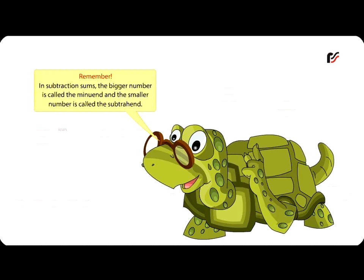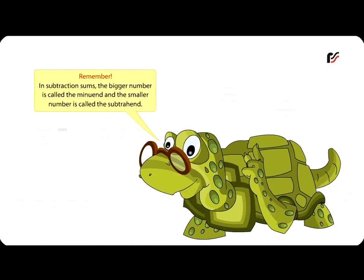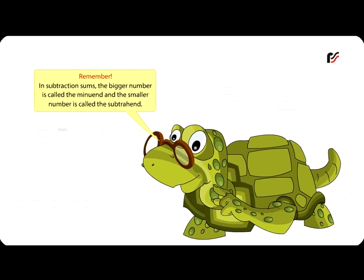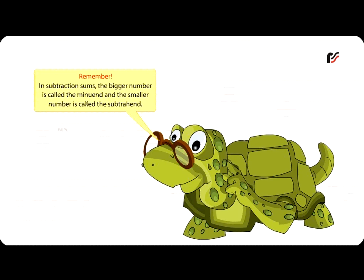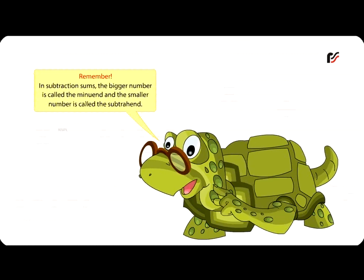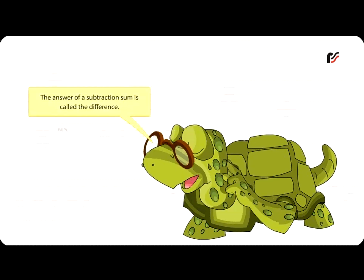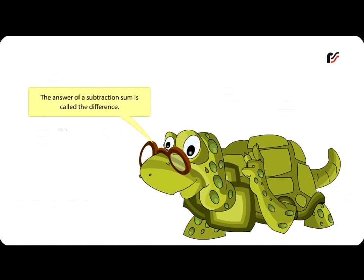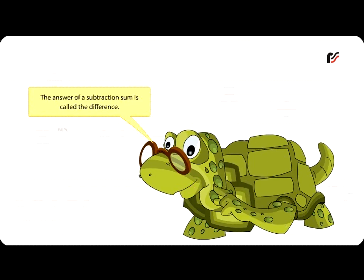Remember, in subtraction sums, the bigger number is called the minuend and the smaller number is called the subtrahend. The answer of a subtraction sum is called the difference.